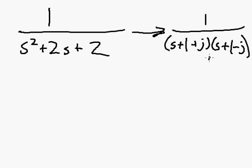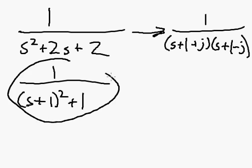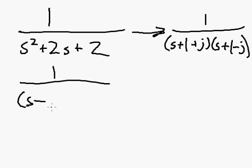You can partially fraction expand this and eventually come to a solution, but it's a lot faster to rewrite this as s plus 1 squared plus 1, and then this is convertible directly. So how do I do that?